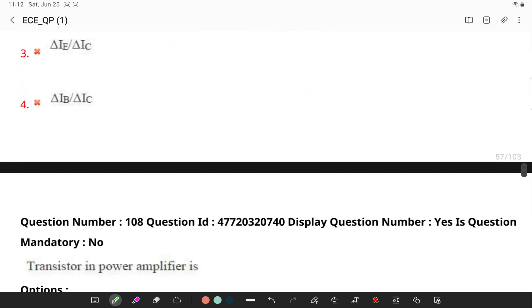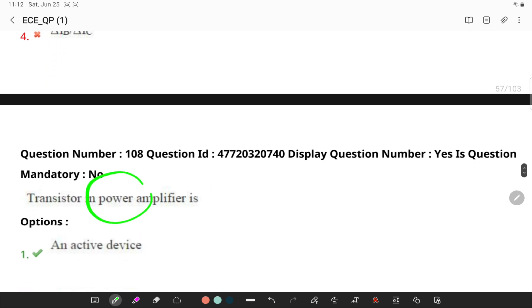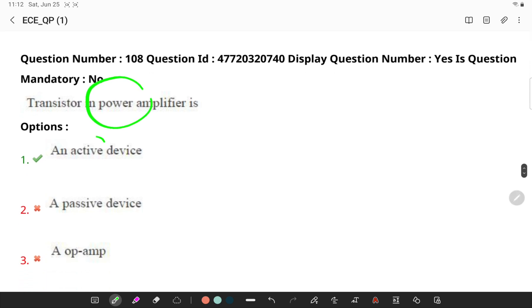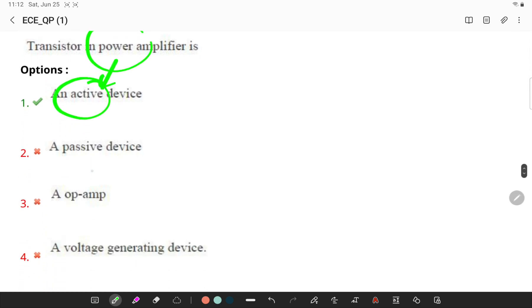Transistor in a power amplifier. The transistor is an active concern in this, concerning in the signal. It is basically an active device. If you see all the other answers, you can eliminate them. Transistor in a power amplifier is simply an active device which can increase the power of a signal.